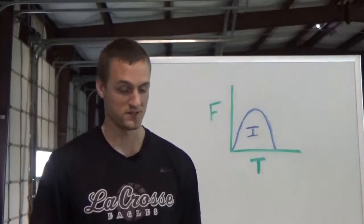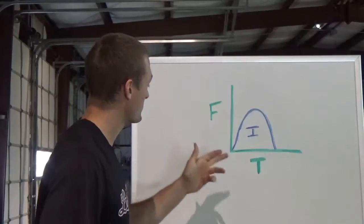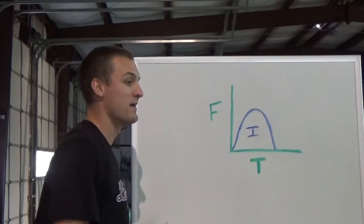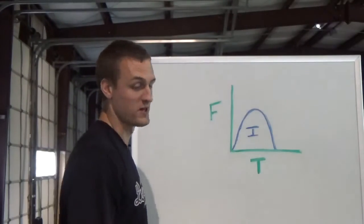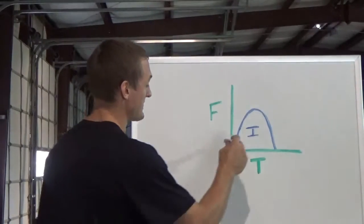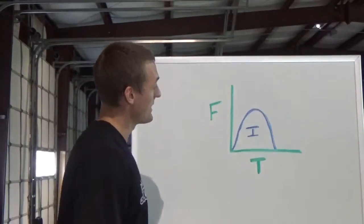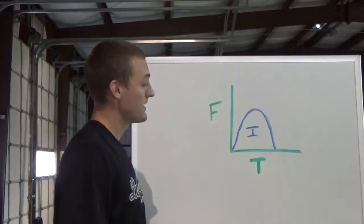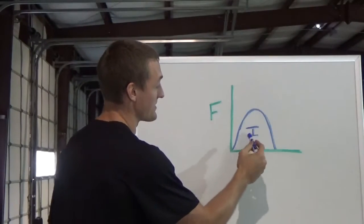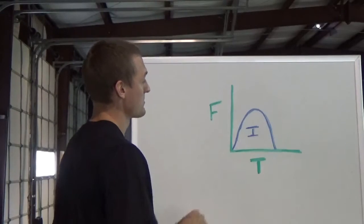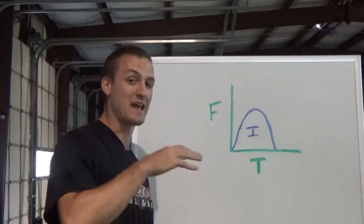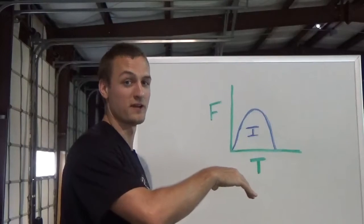Let's review what impulse is. We have a force versus time graph, so we're looking at the vertical force coming up from the ground during one contact in a sprint. That's this line here. Impulse is force times time, so impulse is the area underneath the curve. The size of your impulse is going to determine the size of your vertical jump in your sprint.